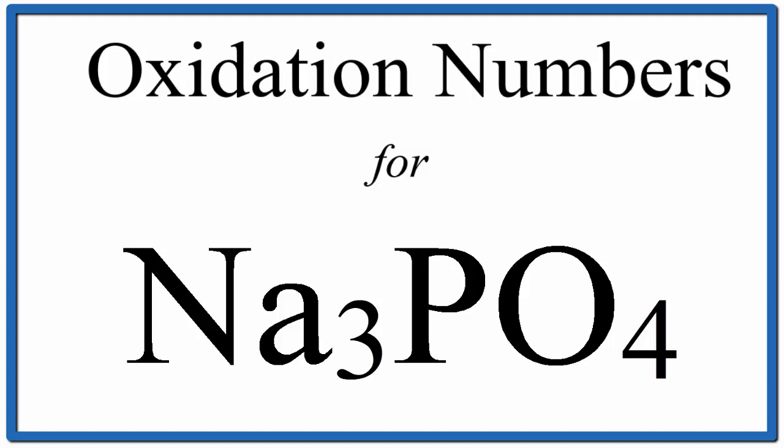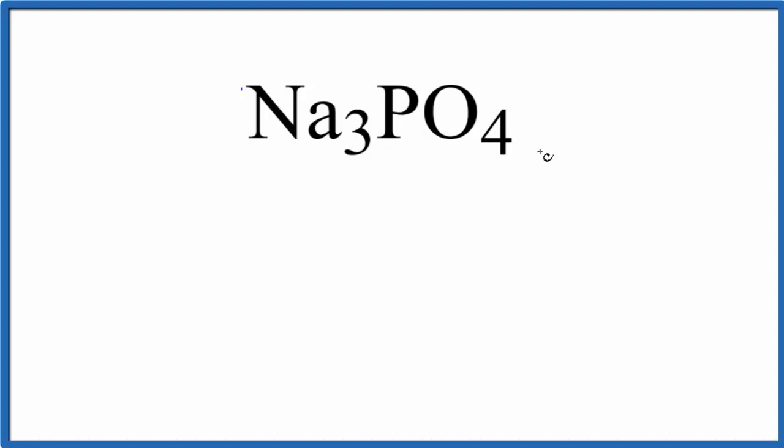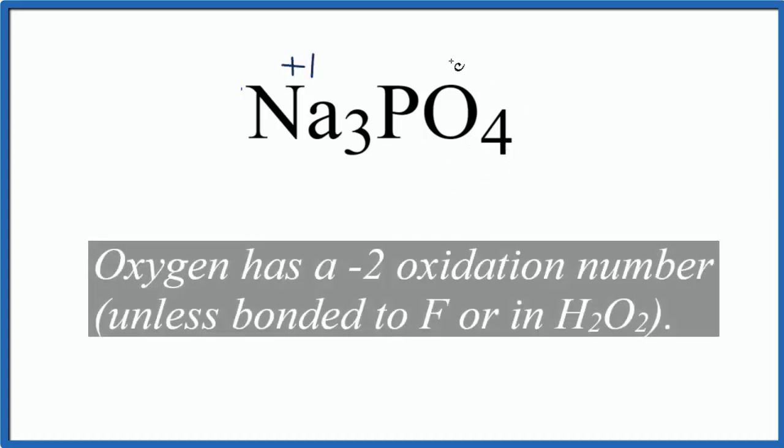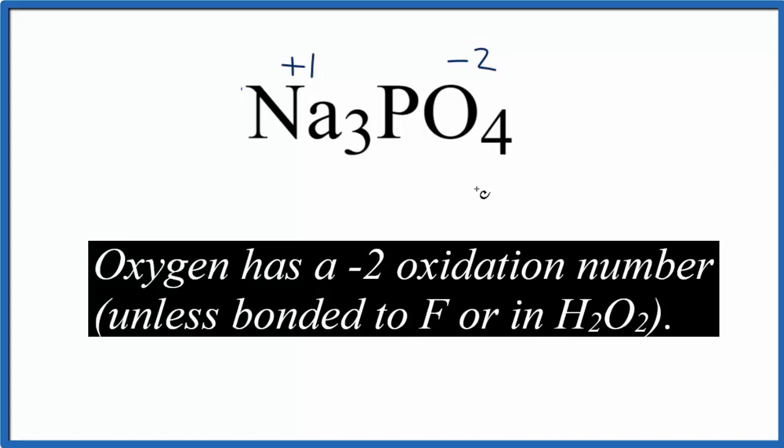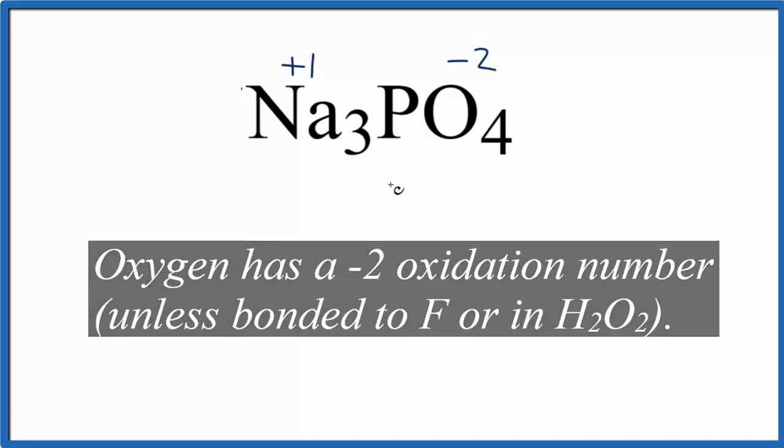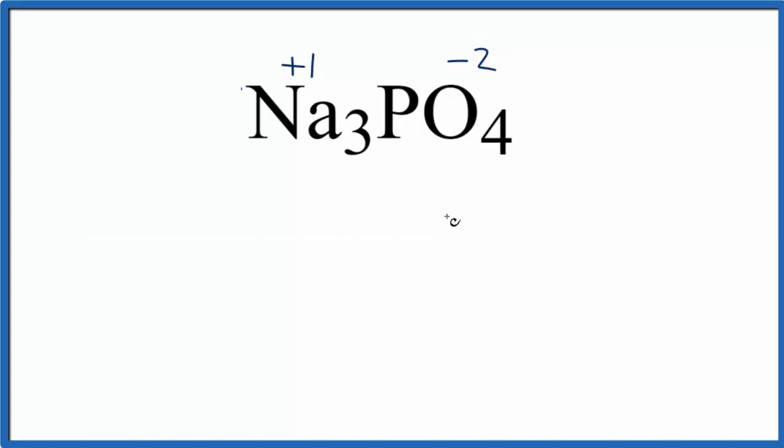In this video we'll calculate the oxidation number for the phosphorus in Na3PO4 compound. This is sodium phosphate. We know that sodium in group one is always going to be plus one and oxygen is usually minus two. If we add up all these oxidation numbers they should equal zero because this is a neutral compound.